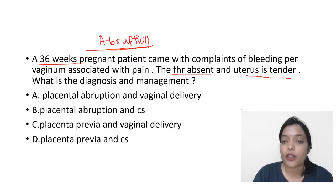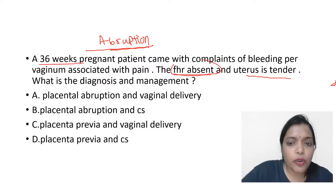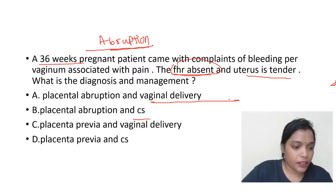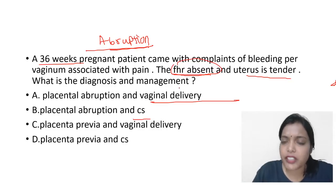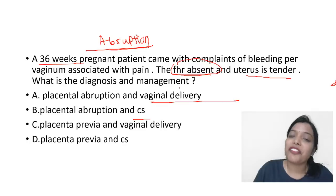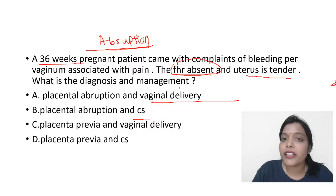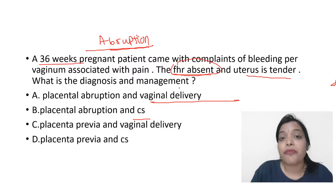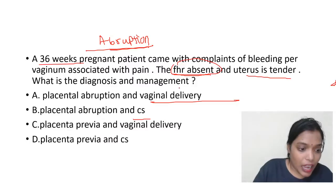In abruption, we know there is a risk of fetal death. When the fetus is dead and there is abruption, do you want vaginal delivery or caesarean section? What is the purpose of caesarean section when baby is dead? The simple story of abruption is the uterus is in a rush to push everything outside. The only case where we might go for caesarean in abruption is fetal distress. But here the fetus is already dead, so the answer is vaginal delivery — option A.